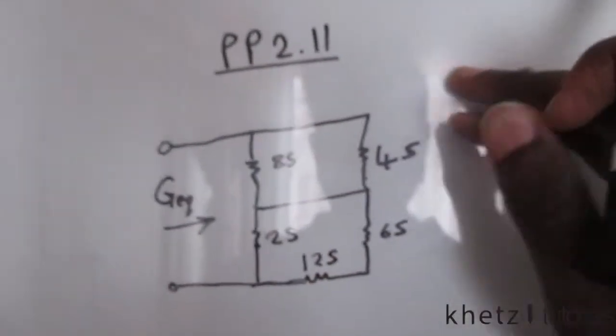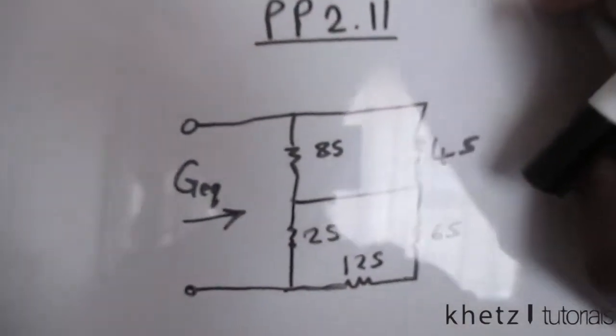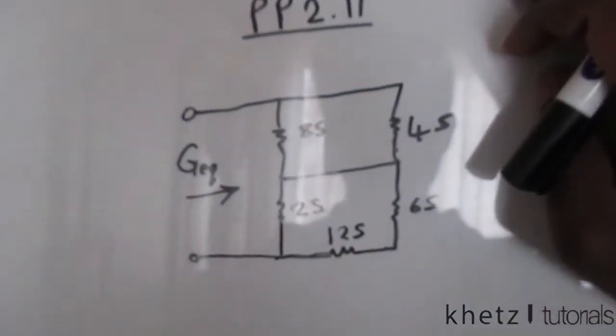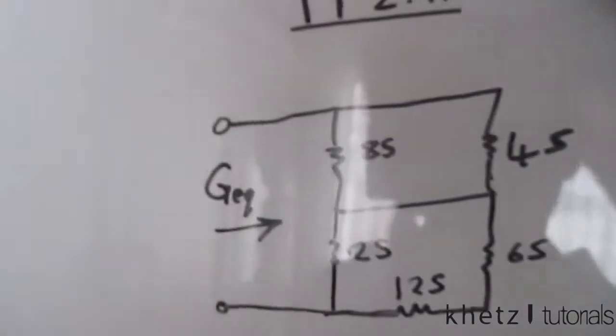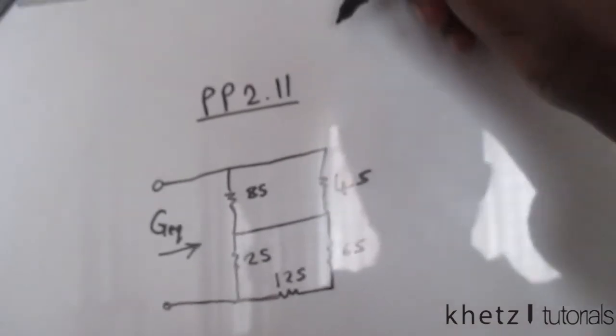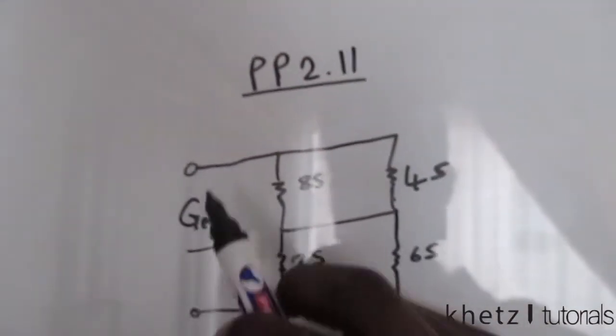Welcome back to CATS Tutorials and in this video we are going to be covering practice problem 2.11. The question asks us to find the equivalent conductance as we look into the circuit from this side or from these terminals.